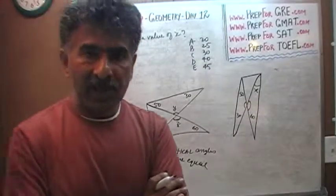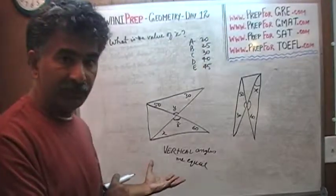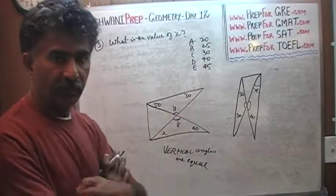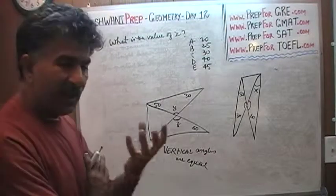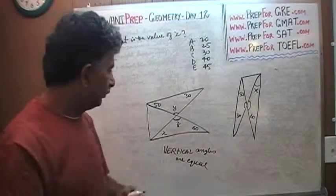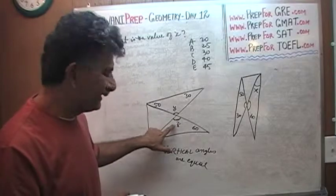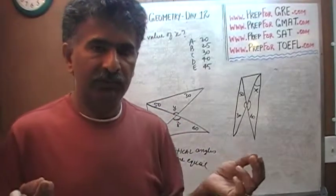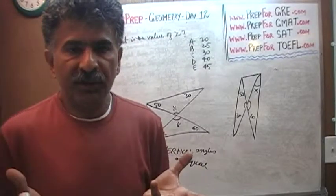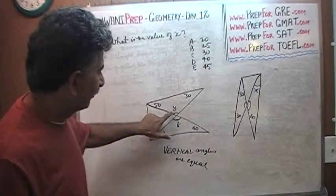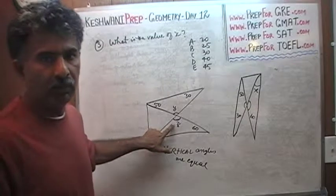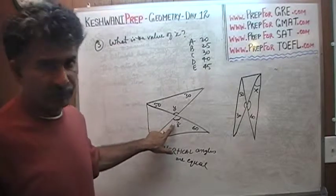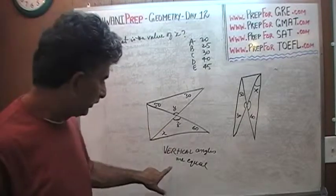You have to understand that algebra, this is algebra and geometry together. Because we are going to set up an algebraic equation and solve for it. Algebra is a language. And when you say something y and something z, it has a meaning. What you are telling me is that this angle has absolutely nothing to do with this angle. None of that is true because we just said that they are equal.